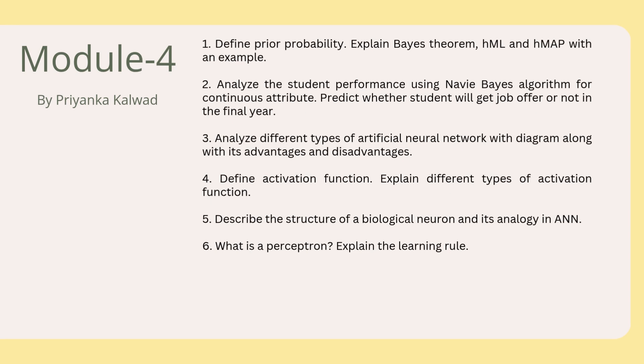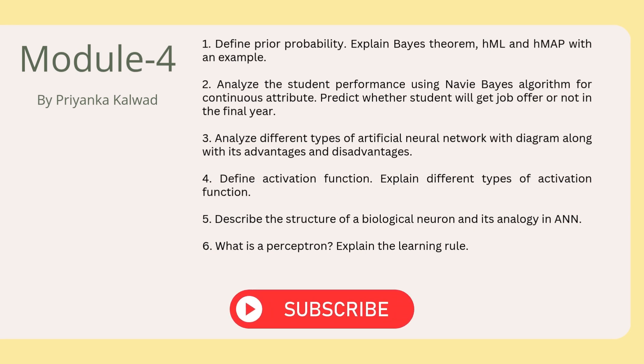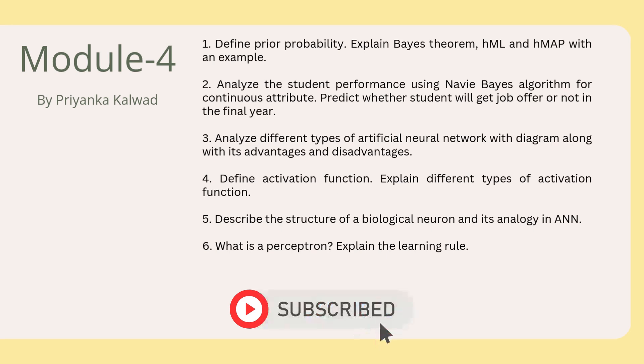Module 4: 1. Define prior probability, explain Bayes theorem, ML hypothesis and MAP hypothesis with an example. 2. Analyze student performance using Naive Bayes algorithm for continuous attributes — predict whether a student will get a job offer in the final year. 3. Analyze different types of artificial neural networks with diagrams along with advantages and disadvantages. 4. Define activation function and explain its different types. 5. Describe the structure of a biological neuron and its analogy in ANN. 6. What is a perceptron? Explain the learning rule. In this module we have one problem: the Naive Bayes algorithm.